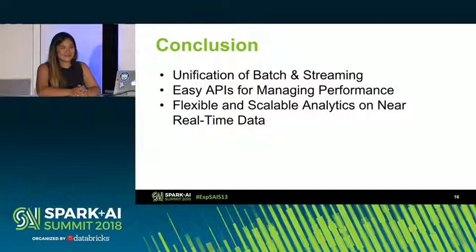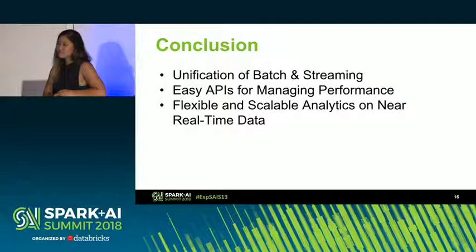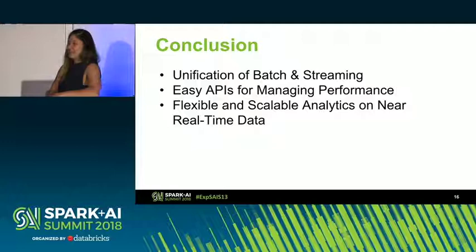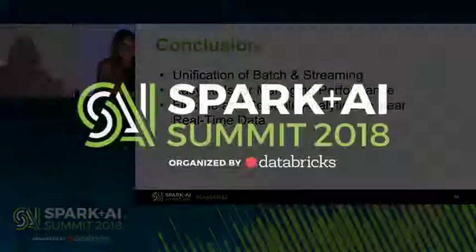Audience question: Regarding the join — what happens when you have a customer that's a bot with 10,000 impressions? Is this a problem you've encountered, and how are you taking steps to solve it? Is this a question on skewed data? Answer: That's one of the great things about Delta — you don't have to partition by advertiser ID, you could simply lean on Z-ordering. Let's give Carol a big hand.